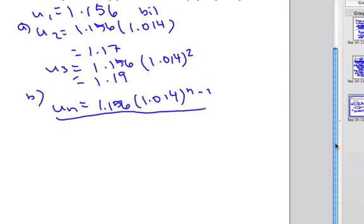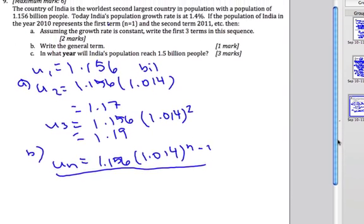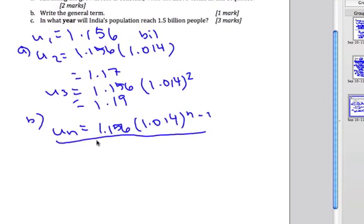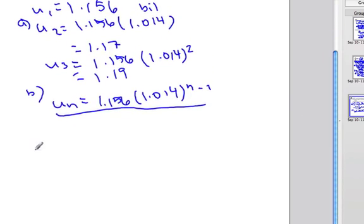All right letter C says in what year will India's population reach 1.5 billion people? Okay here we go. Reach 1.5 billion people.